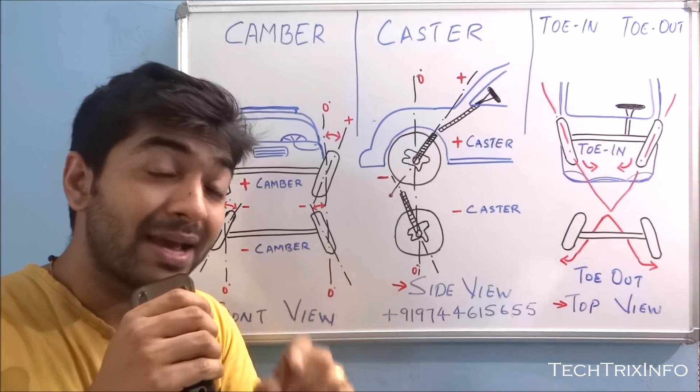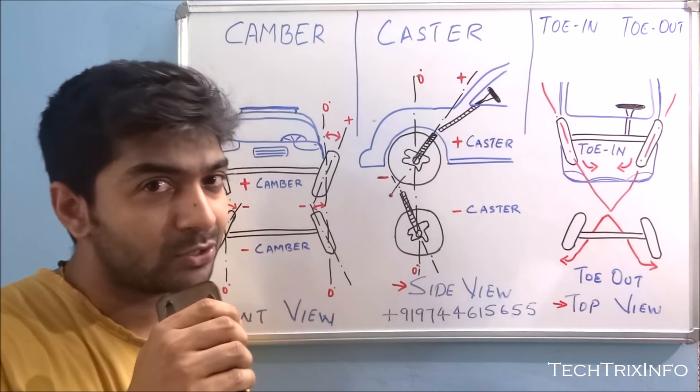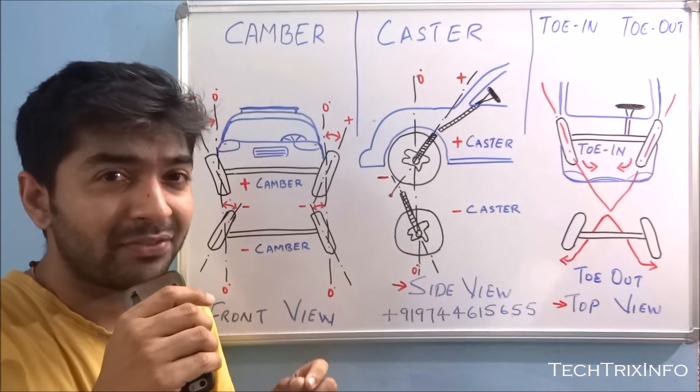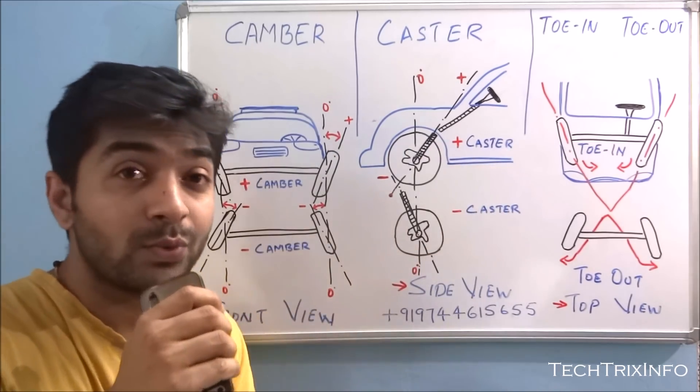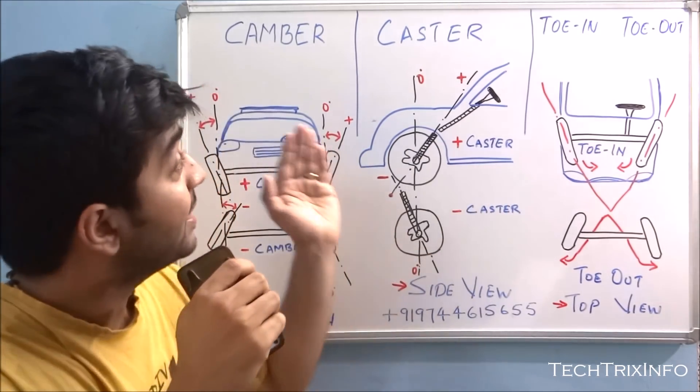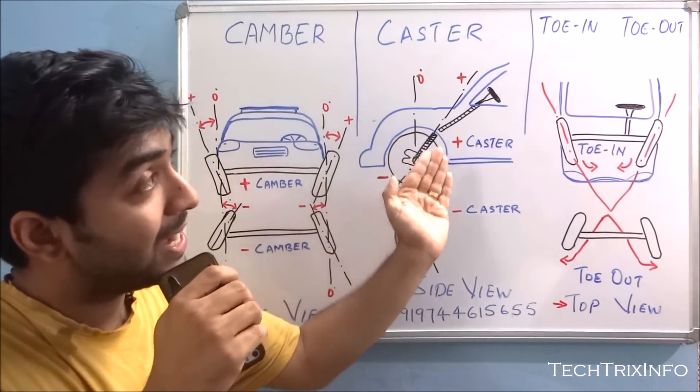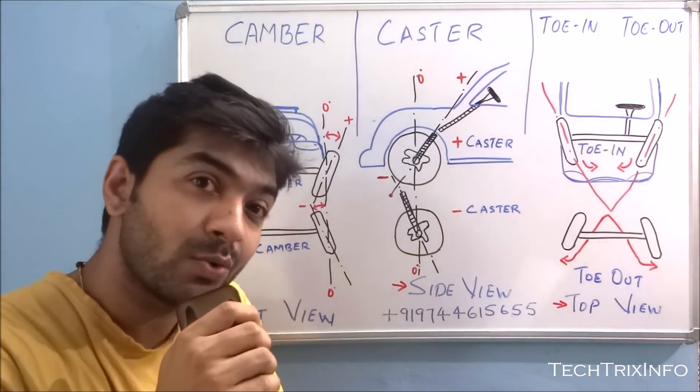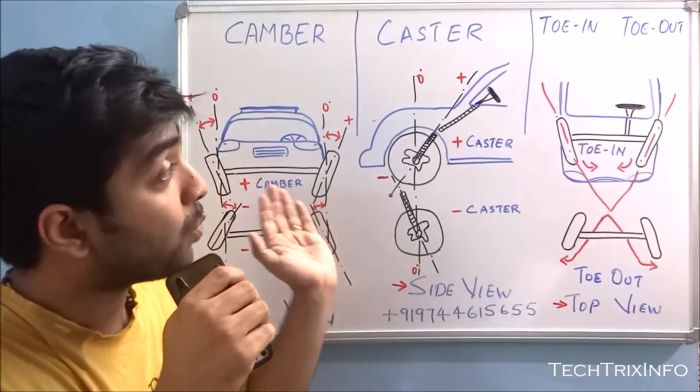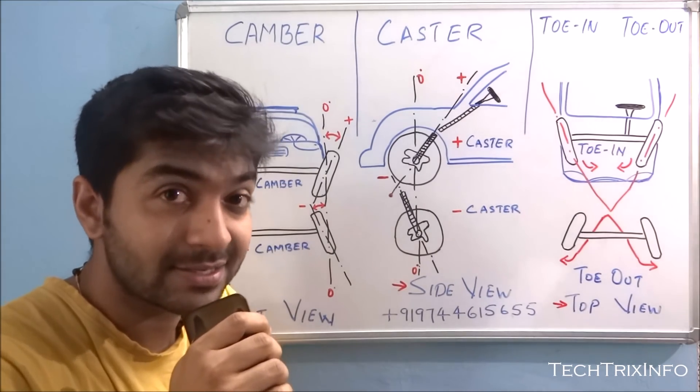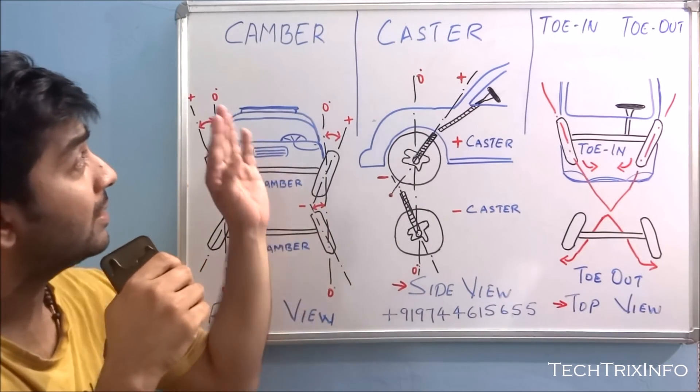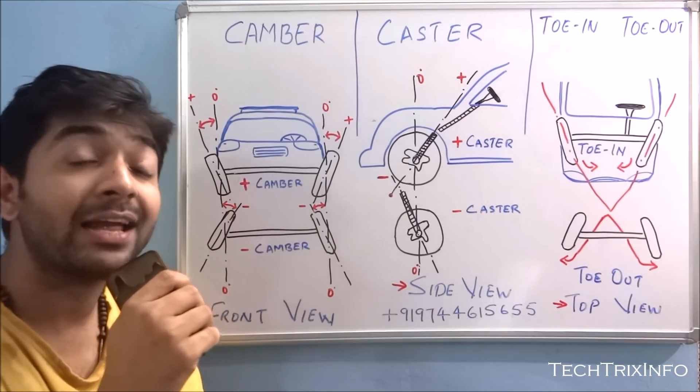To ensure the wheel alignment, there are three factors which are very critical. One of it is camber, the other is caster, and the third one is toe-in and toe-out. So now let's discuss what each of them really does.